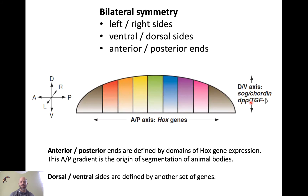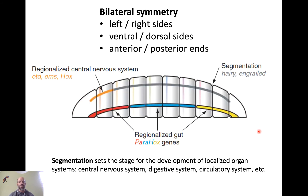Other genes define the dorsal-ventral axis and the left-right axis. The Hox genes define the anterior-posterior axis, which is a very important component of body segmentation. Segmentation is important because it allows the development of regionalized anatomical systems. For example, the central nervous system is enabled by segmentation — you get the evolution of the head, where sensory systems are localized and concentrated, only through development controlled by Hox genes. Digestive systems also develop along the segmentation plan: we have mouths and anuses, and a digestive system connecting them is only possible through this Hox gene-defined segmentation.